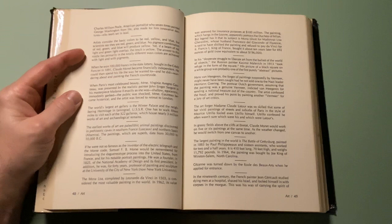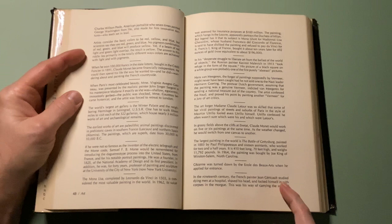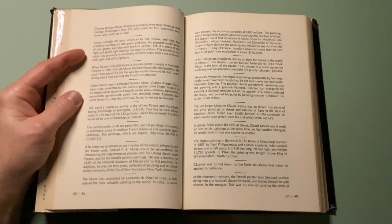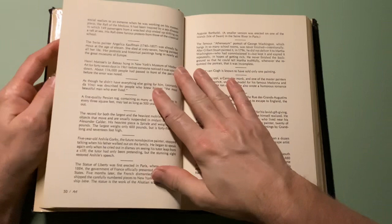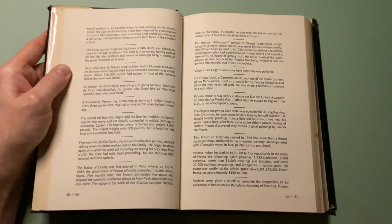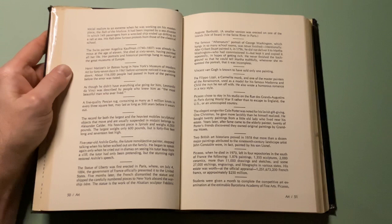In the 19th century, the French painter Jean-Louis Géricault studied dying men in a hospital, shaved his head, and locked himself in with corpses in the morgue. It was in this way of carrying the spirit of social realism to an extreme when he was working on his masterpiece, The Raft of the Medusa. It had been inspired by a sea disaster in which 149 passengers from a wrecked ship ended up drifting on a raft at sea. The raft drew furious protests from those of the classical school.